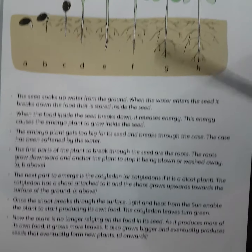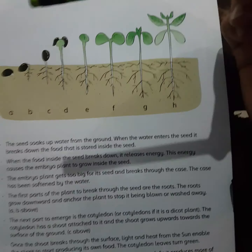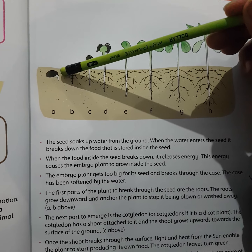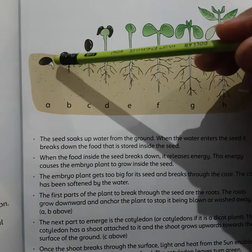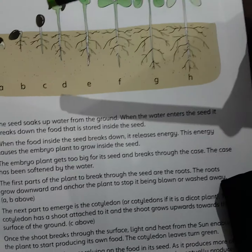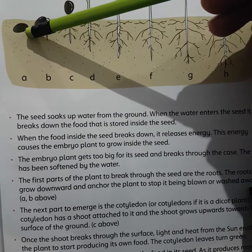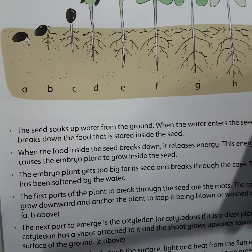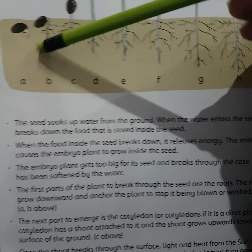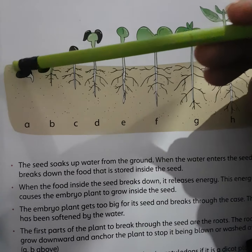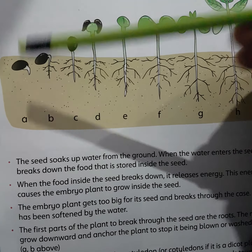Page number 41 पे देखें — यहाँ पर diagram के ज़रिए से seed में germination के different processes दिखाए गए हैं। सबसे first process में seed ground से water absorb करता है। Water, seed के अंदर already stored food में dissolve होता है। Dissolve food energy release करता है जिससे seed में मौजूद embryo grow करना start करता है। Embryo size में बड़ा होता है और seed coat को break करता है — जो पहले ही water absorb करके soft हो चुकी होती है।